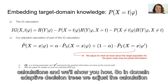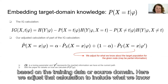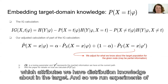The goal of domain adaptive decision trees is for it to approximate the test data. We do that by adjusting those two probability calculations. In domain adaptive decision trees, we adjust the calculation of the probability of each attribute value at the current node. Usually this is calculated based on the training data or source domain. Here, we adjust that calculation to include what we know about the probability in the target domain, which may be full or partial information, depending on which attributes we have distribution knowledge about in the target.